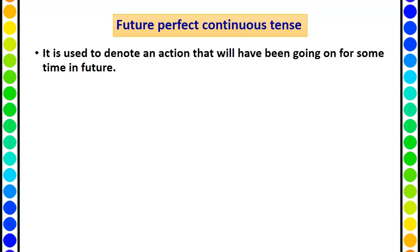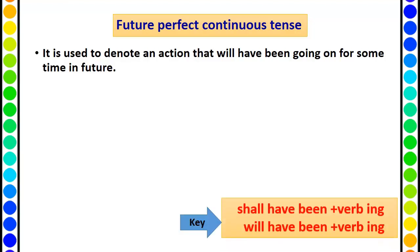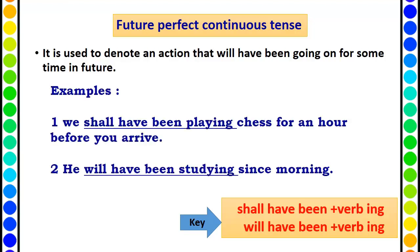Future perfect continuous tense. It is used to denote an action that will have been going on for some time in the future. Keywords: 'shall have been'/'will have been' plus the present participle, that is verb plus 'ing'. Example: We shall have been playing chess for an hour before you arrive. All of these are one kind of prediction or supposition.